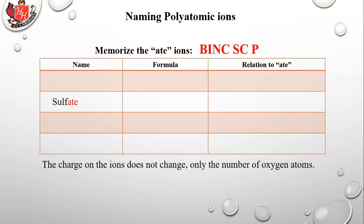Sulfate. That was part of the SC in the middle. So that's going to be a two minus. So it's SO4 2-. We memorize the ate. Now if you add an oxygen it's SO5 2-. That's persulfate. So one more oxygen than ate.